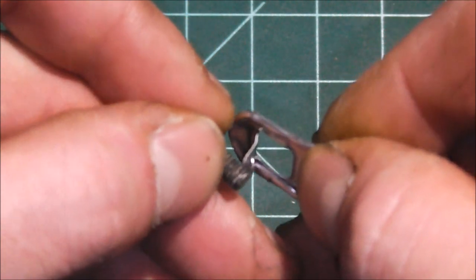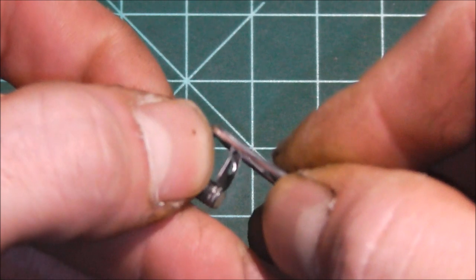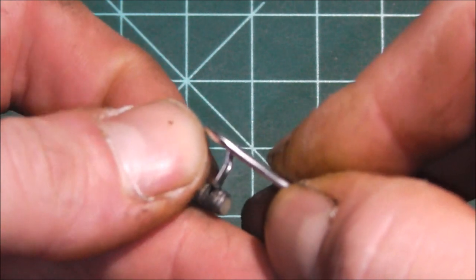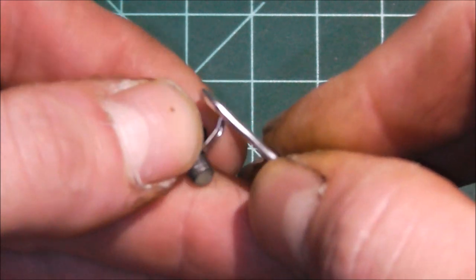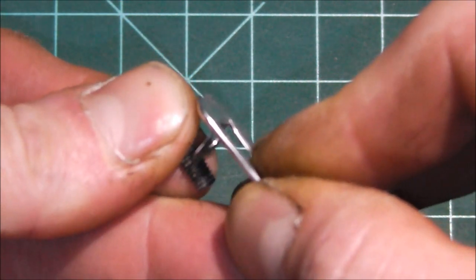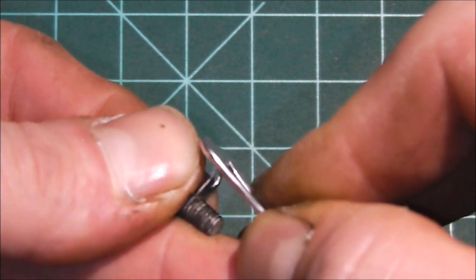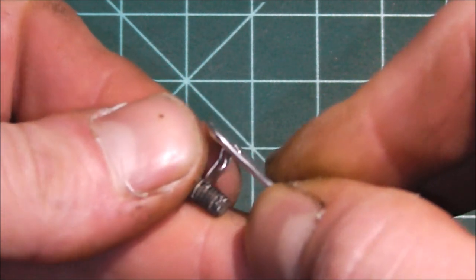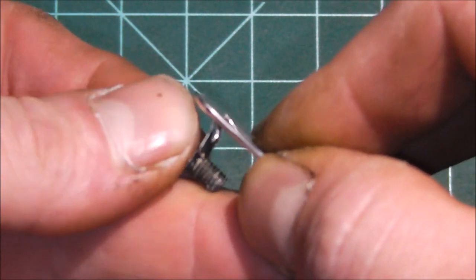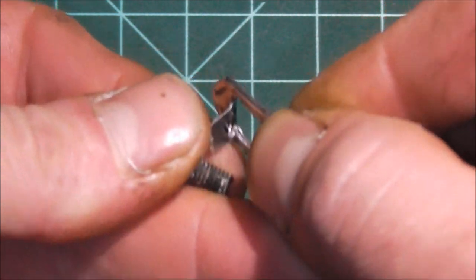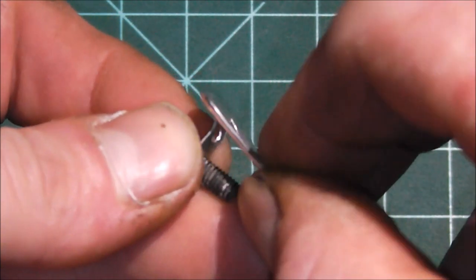And I advise letting this soak overnight in the alcohol and then you can run the tab around the threads. This again is not really that effective. It will clean out your fastener. It just takes a long time and you're going to be sitting here trying to chip away at the stuff that's drying.